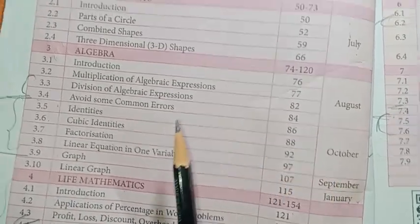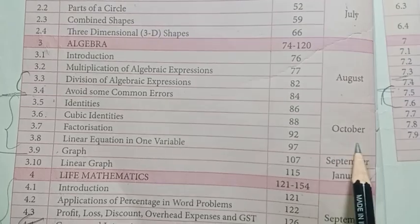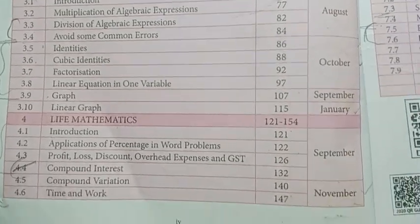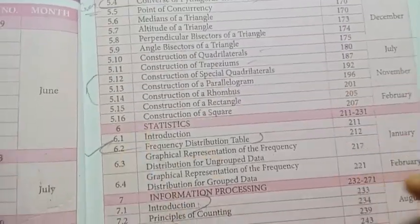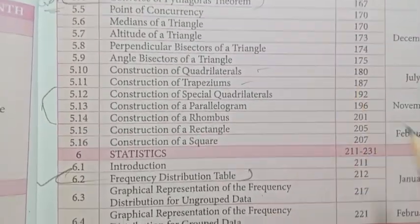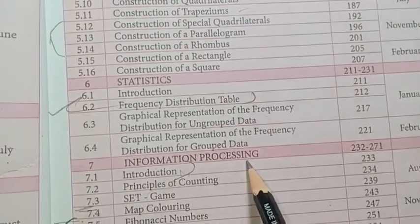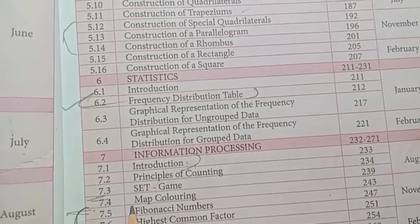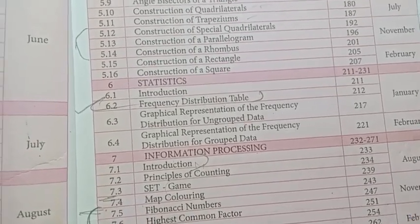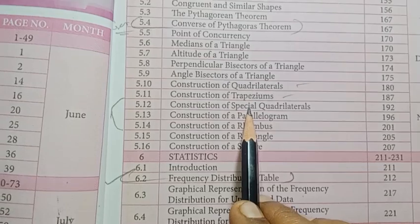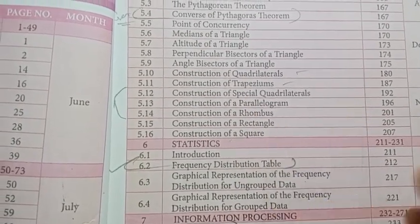In the portions, chapter 3 algebra, section 3.5. That is October month portion. And then November month portion: life mathematics, time and work. And then chapter 7, information processing, sections 7.4 and 7.6. November month portion. And then geometry: quadrilateral, parallelogram and rhombus.